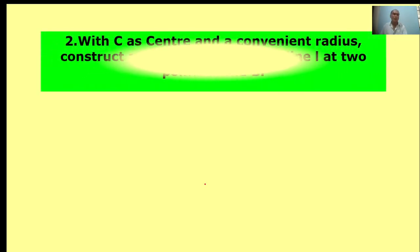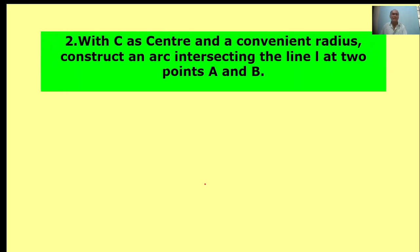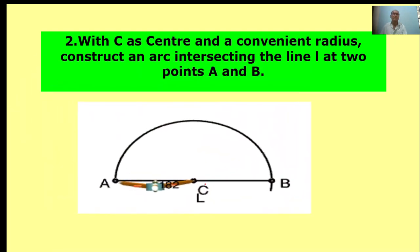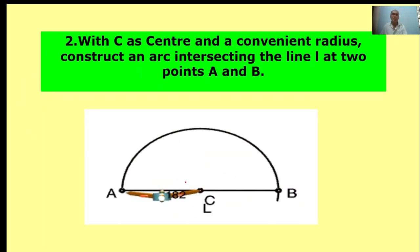With C as center and convenient radius, construct an arc intersecting the line L at two points A and B. Take center point C with a convenient radius to draw one arc. This arc intersects at point A and intersects at point B.